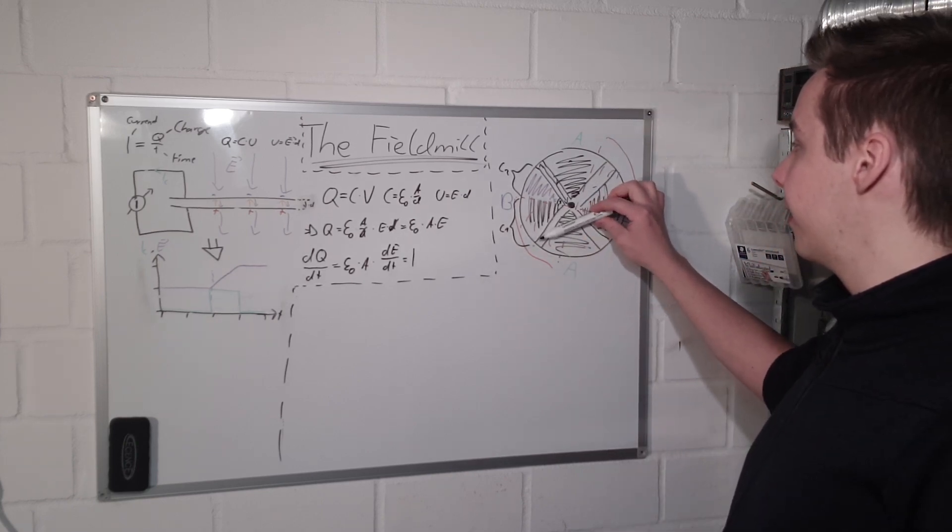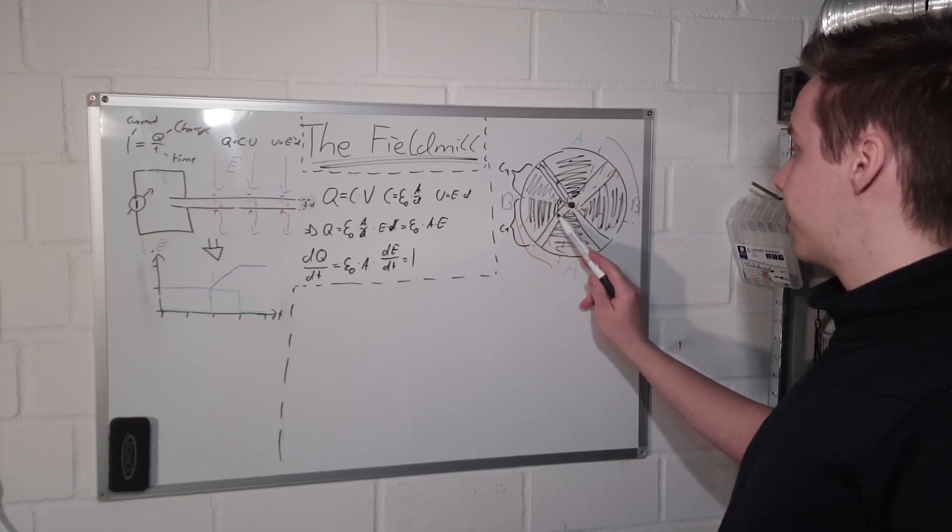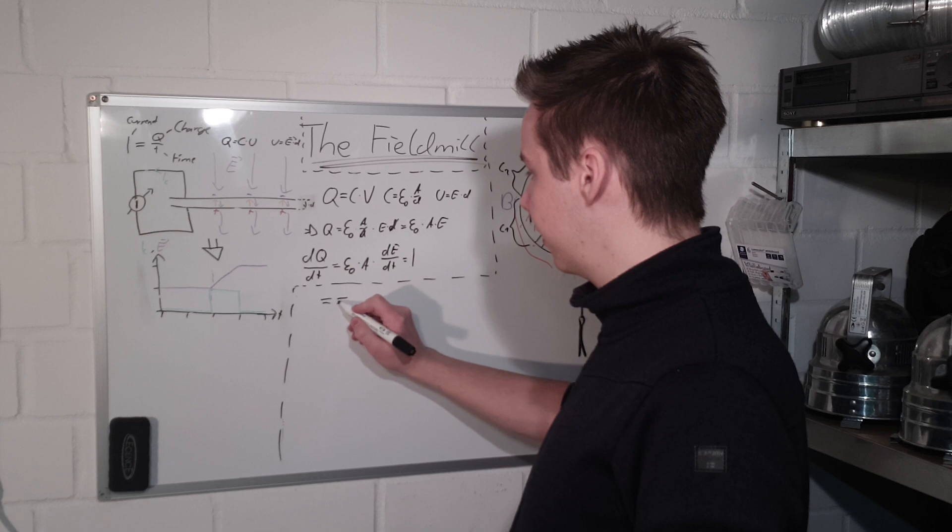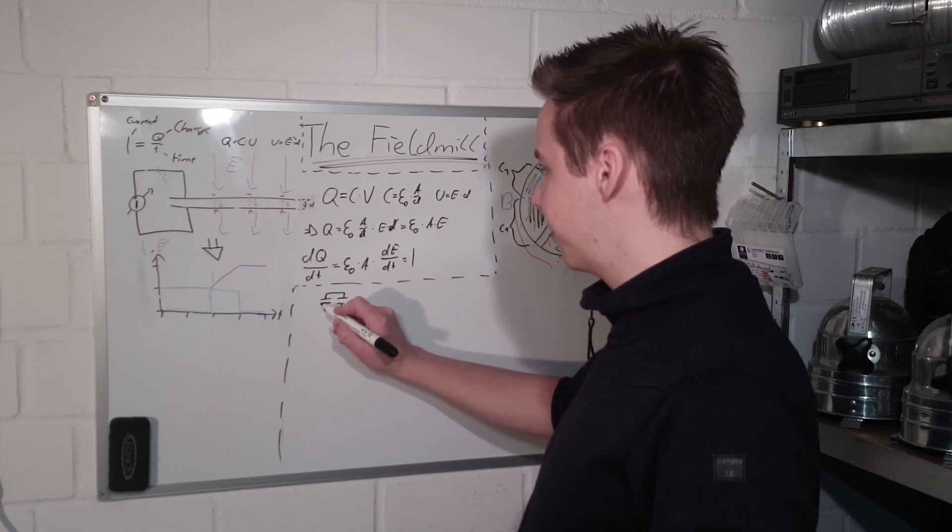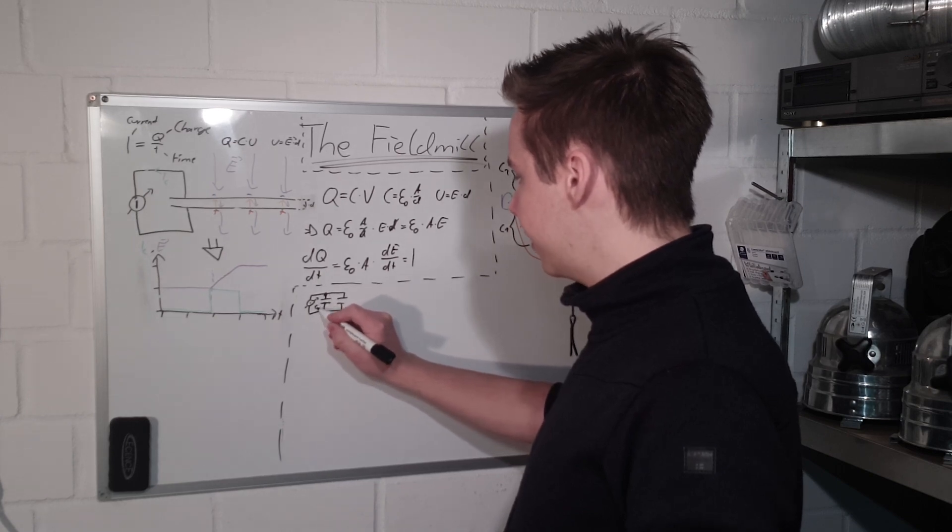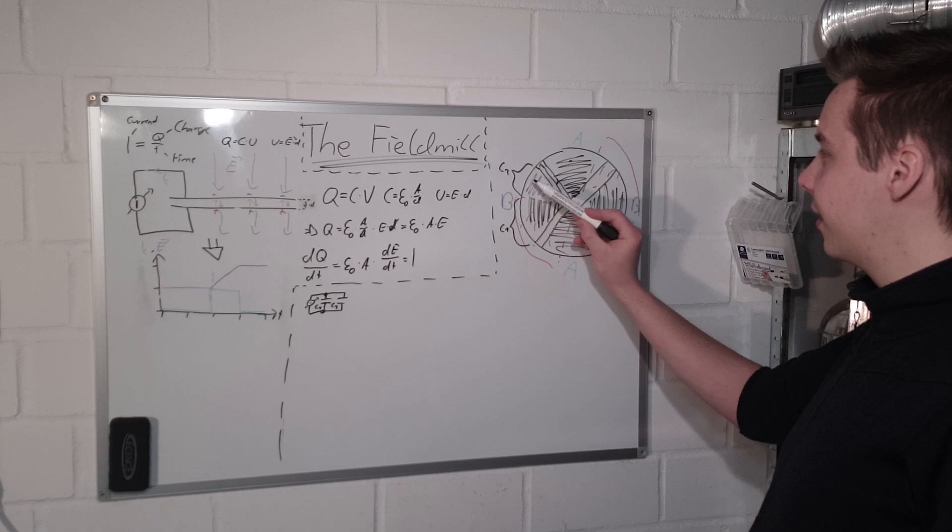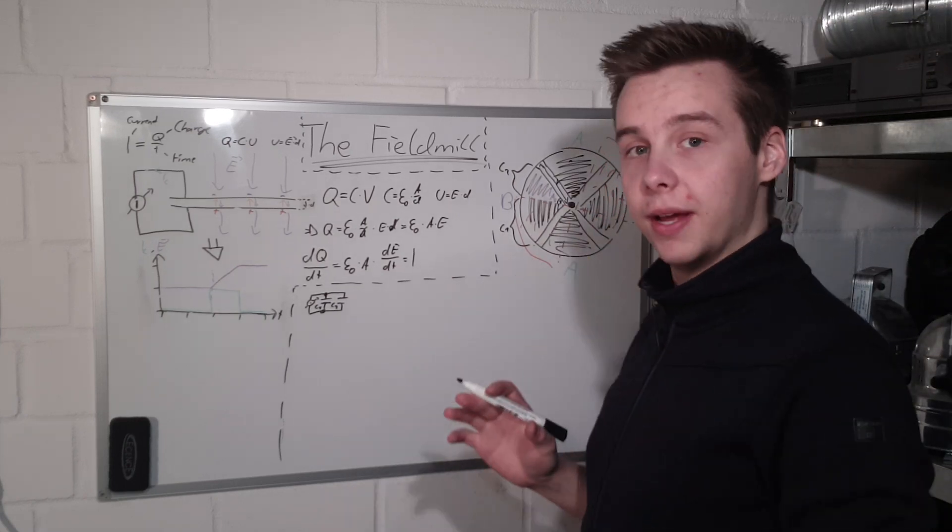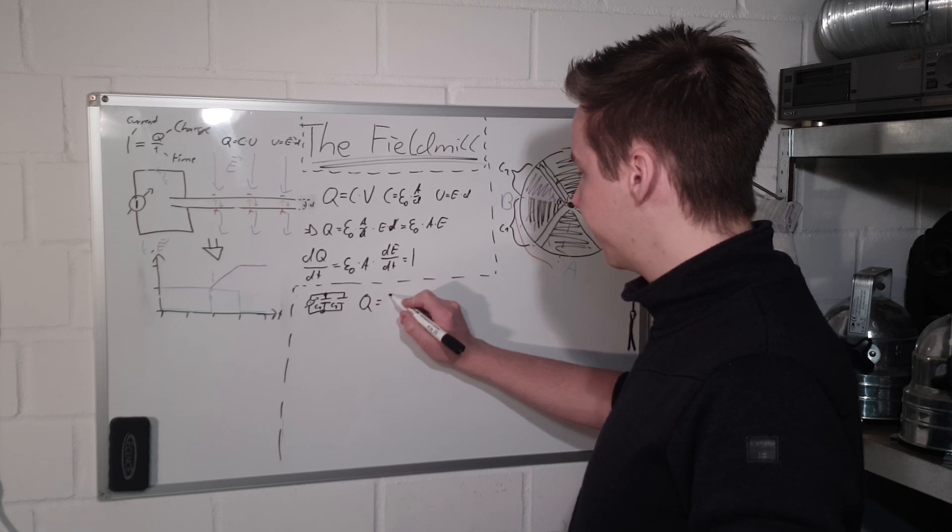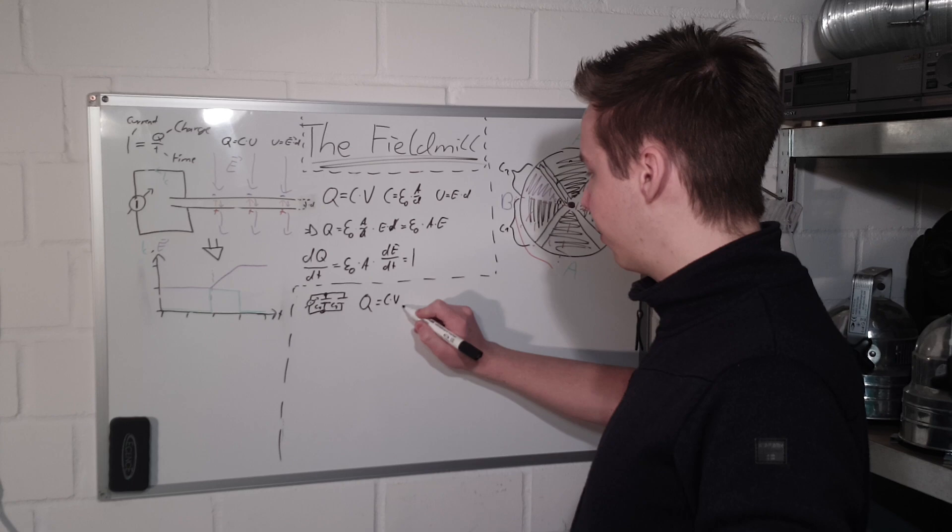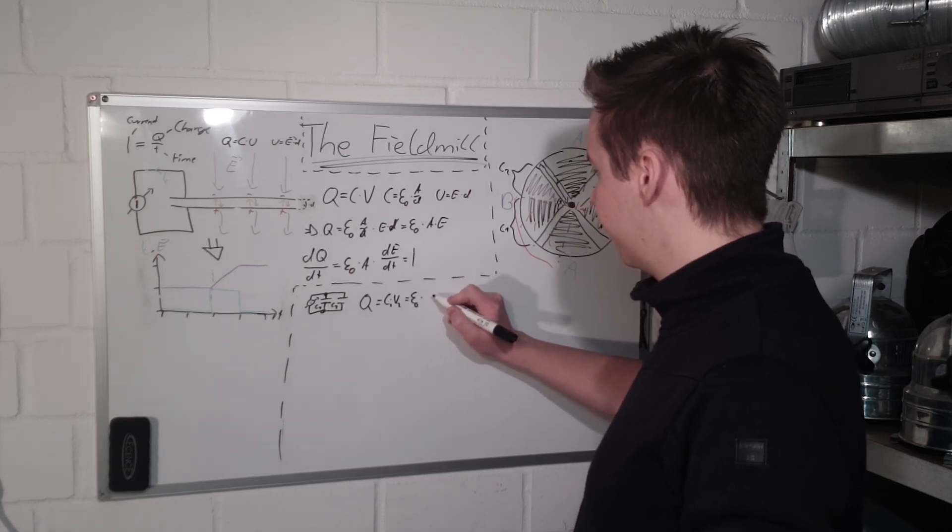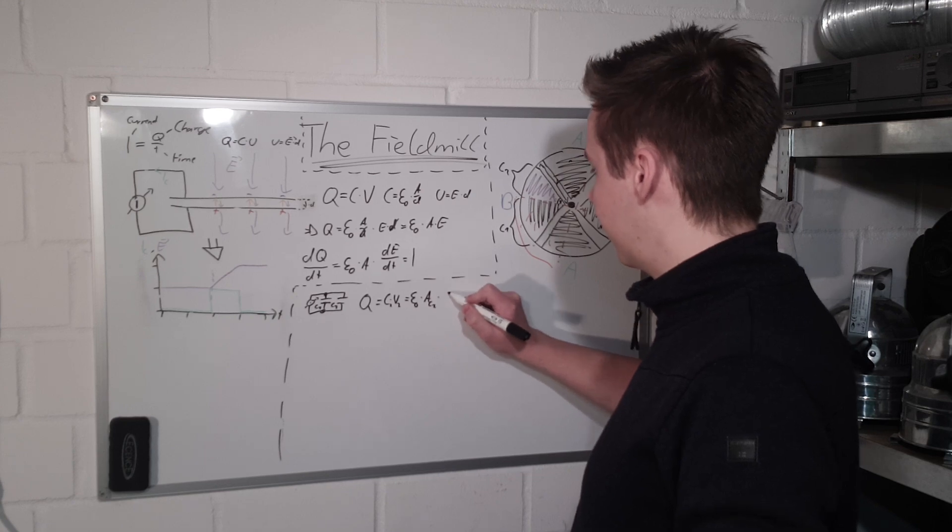First of all, we would want to look at the total amount of charge moved again. Now, if we think of the field mill's electrode as a capacitor with no field in it, the shielded part, and a capacitor with the field in it, it's basically two capacitors in parallel. C1 has no field in it, C2 has a field in it. And because the charges that move are dependent on the field, C1 is effectively not there because it doesn't contribute any charges. So the Q is only C times V of capacitor 2. So C2 times V2 is equal to epsilon zero times area of C2 times the field strength.